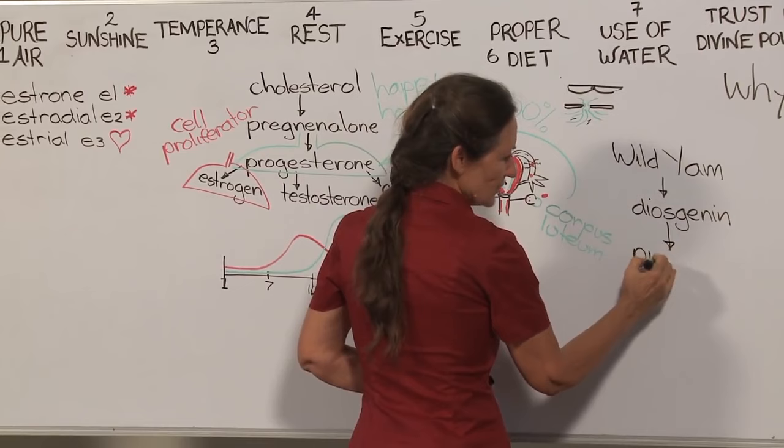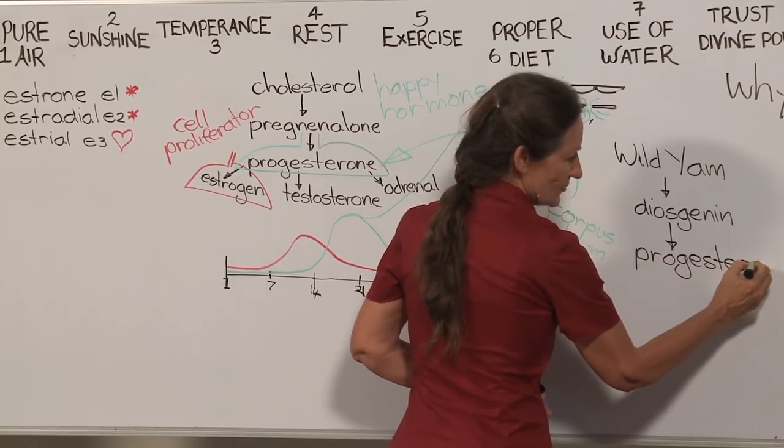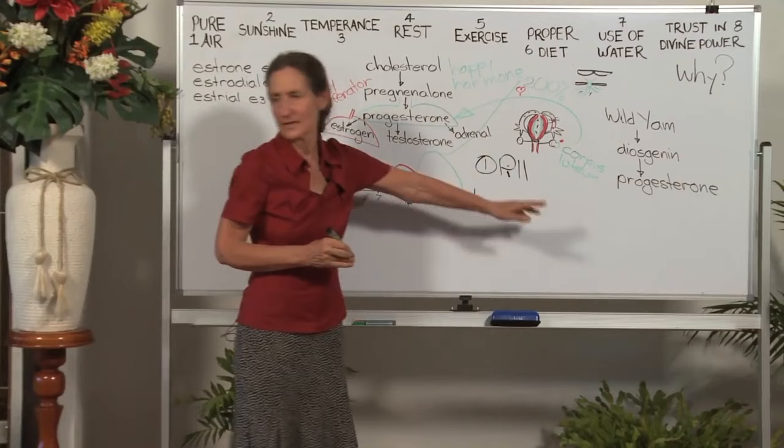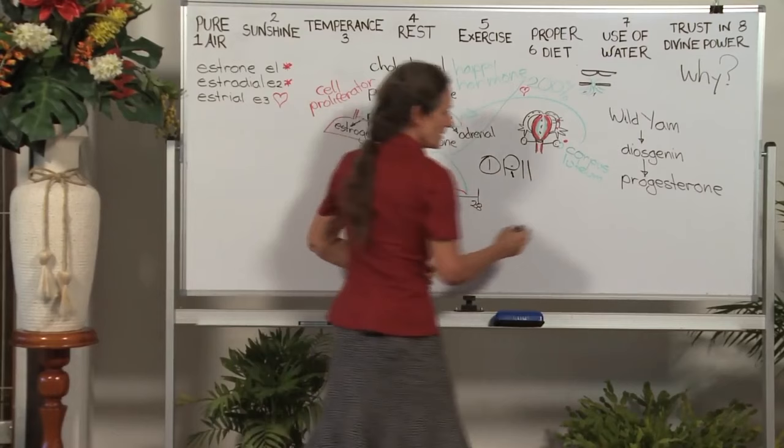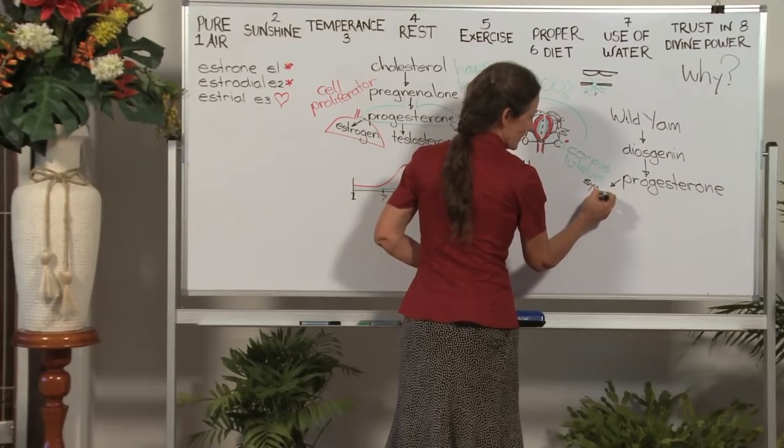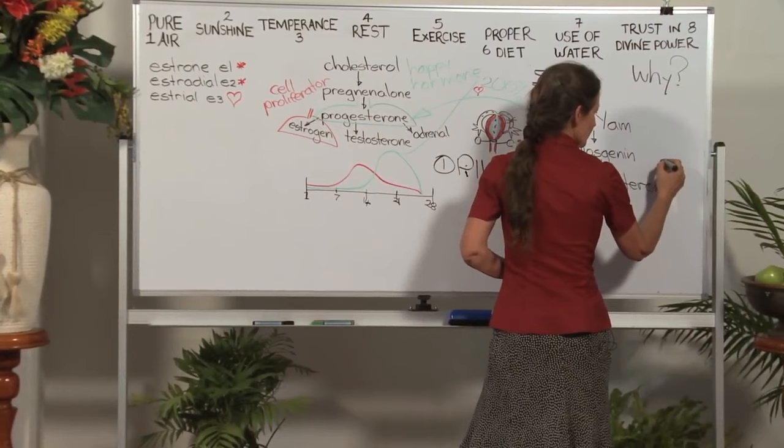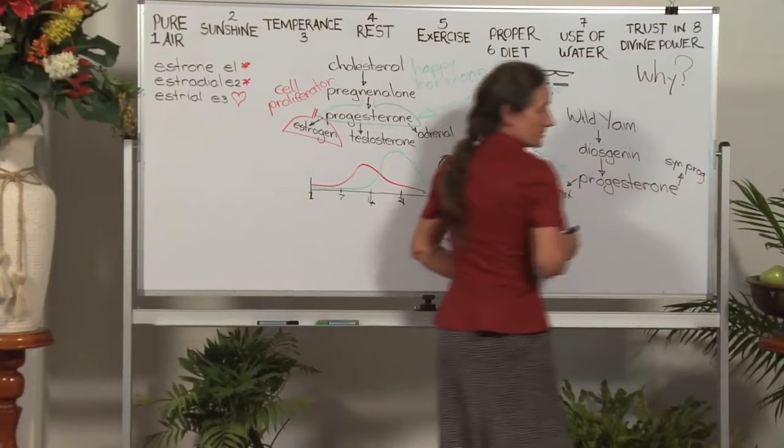In a laboratory, diosgenin can be converted to progesterone, called progesterone because it has an identical molecular structure to the progesterone that is made in a woman's body. So the pharmaceutical companies cannot patent that. They can only patent something new, something they create. So they add a few more atoms in one area and come up with a synthetic estrogen. They add a few more atoms in another area and come up with a synthetic progesterone.